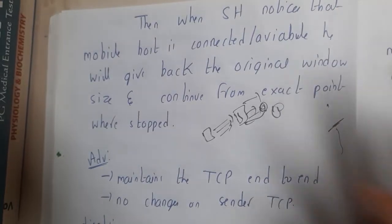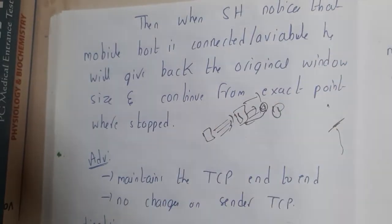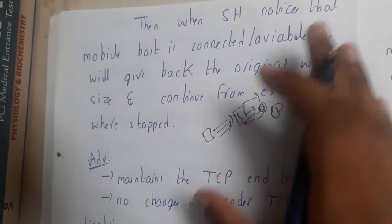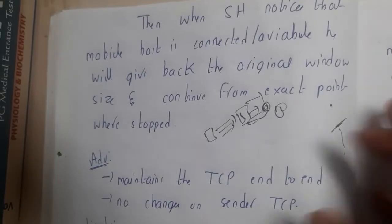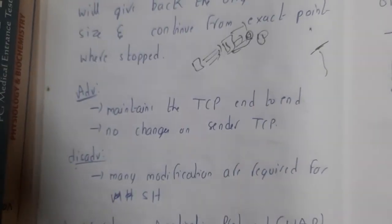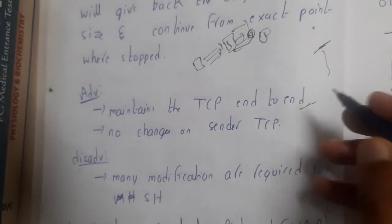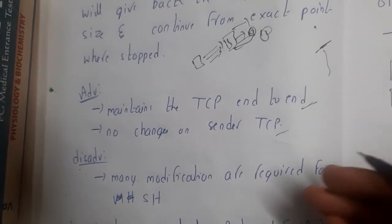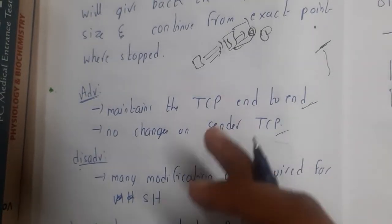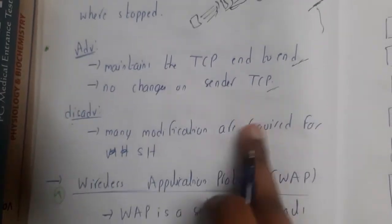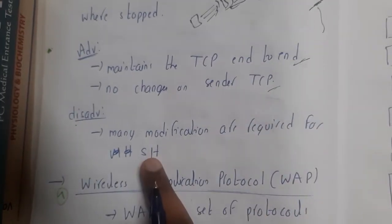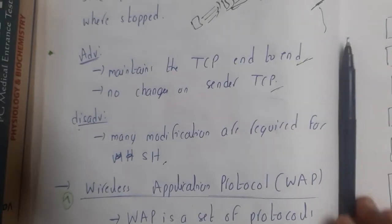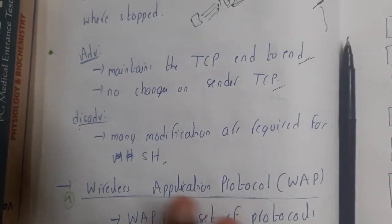This is the major advantage of Mobile TCP. It maintains TCP end-to-end with no change on the sender side TCP, so it is almost the same. The only disadvantage is that many modifications are done to the SH, such as removing the buffer, which is also a disadvantage.